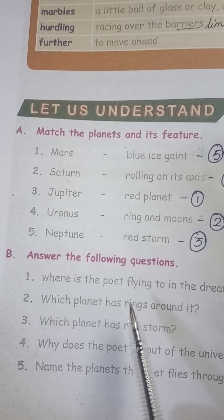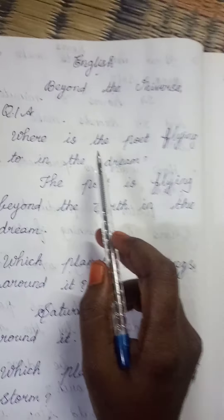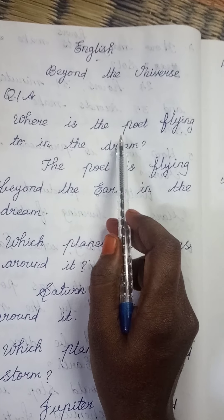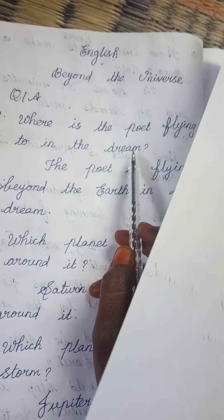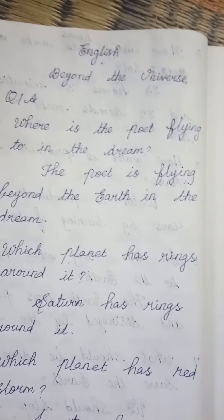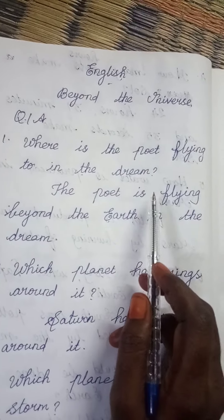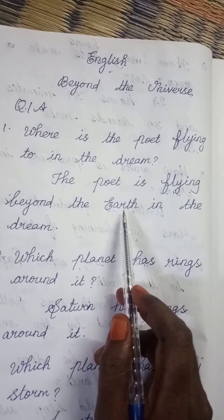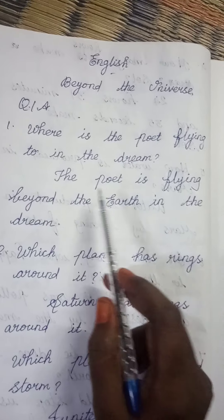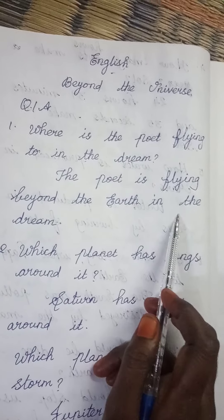Shall we go to the question answers now? See the first question: Where is the poet flying to in the dream? The poet is flying beyond the earth. Beyond the universe we saw now — beyond the earth in the dream. The poet is flying beyond the earth in the dream.